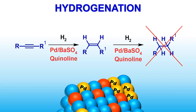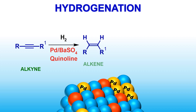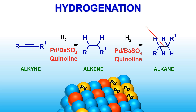Let us understand this using an illustration. Here, a disubstituted alkyne with R groups on either side is converted to a cis alkene using Lindlar's catalyst. No alkane is formed even if hydrogen is present. The reaction is stopped at the alkene stage.